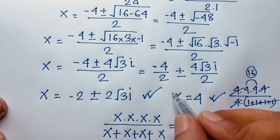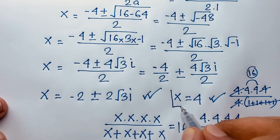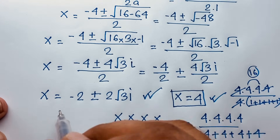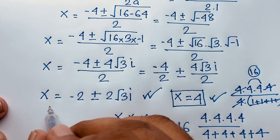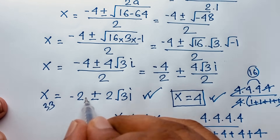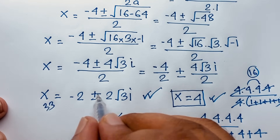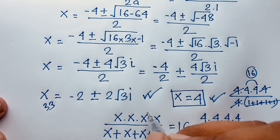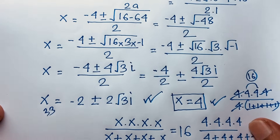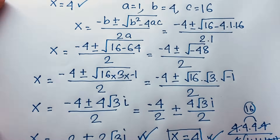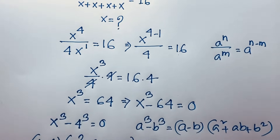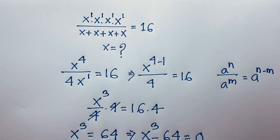So x equals 4 is our real solution in this math Olympiad question, and our complex solutions are x equals negative 2 plus or minus 2√3 i. Thank you all. If you enjoy this video, please subscribe to my channel for other interesting videos. Goodbye, take care.